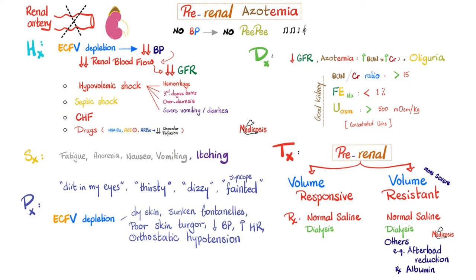Recap: pre-renal azotemia — no BP, no PP. The patient has extracellular fluid volume depletion lowering blood pressure and decreasing renal blood flow. Causes include hypovolemic shock from hemorrhage, third-degree burn, over-diuresis, severe vomiting or diarrhea, septic shock, and CHF. With CHF, although there is volume overload, the fluid is in the interstitial space — ankle edema — not inside the vessel. The intravascular compartment is what perfuses the kidney, not the interstitial space. NSAIDs, ACE inhibitors, and ARBs also decrease glomerular perfusion.